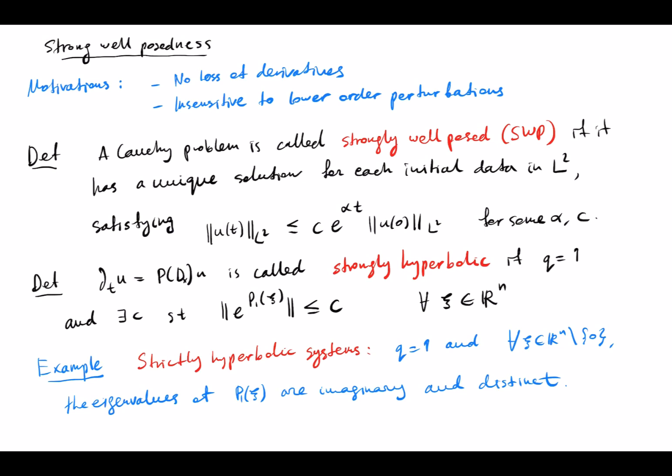We have seen that Petrovsky well-posedness has two properties that are not very desirable. First, it loses derivatives. Second, it is sensitive to lower order perturbations. Today we want to look at what happens if we actually try to avoid these two properties. This will be done through a new notion of well-posedness called strong well-posedness.